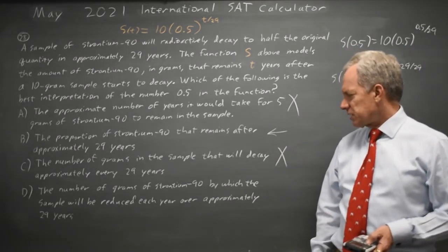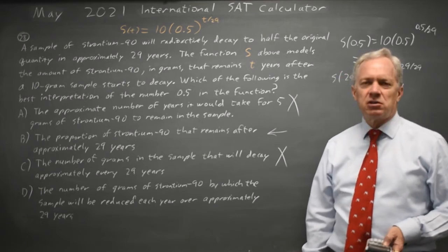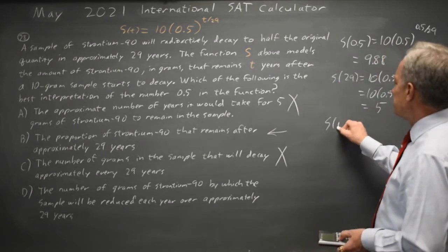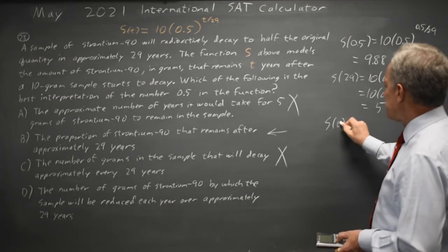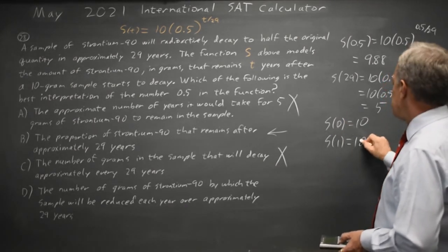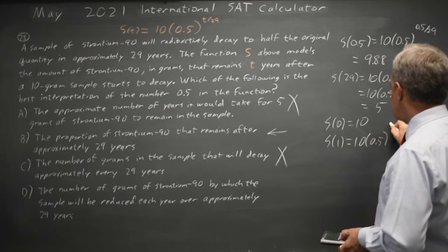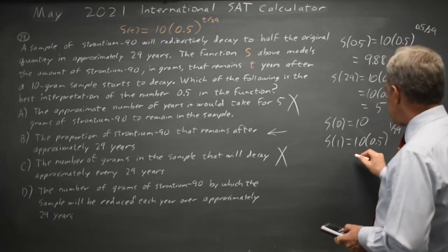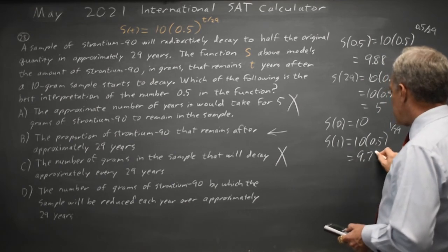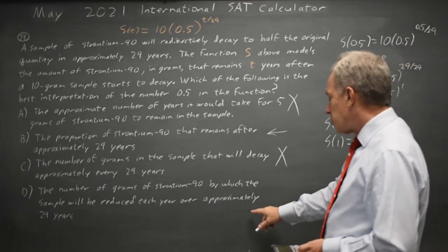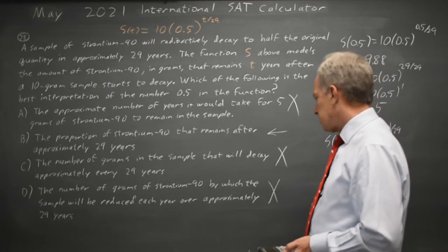Choice D: the number of grams the sample is reduced each year over 29 years. If I look at s(1), well s(0) is 10, s(1) is 10 times 0.5 to the 1 over 29, which is 9.76. We did not reduce by 0.5 grams, so D is not correct.